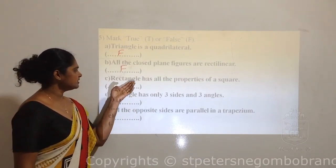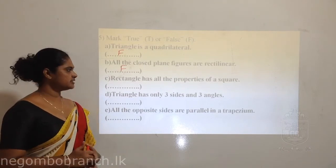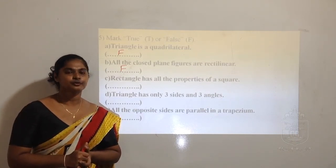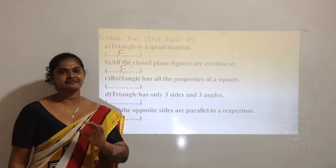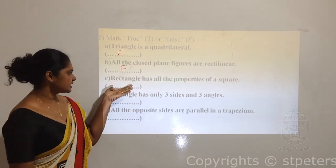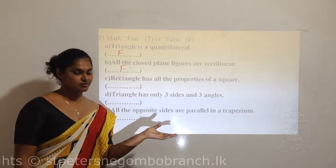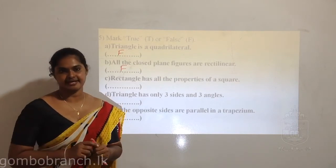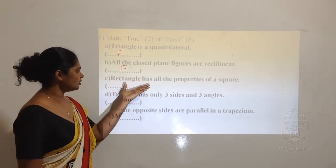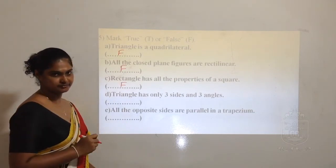Third: Rectangle has all the properties of a square. Can we say rectangle and square are the same? No - otherwise we could call a rectangle a square. Rectangle has all the properties of a square? No. All four sides are equal in the square, but only opposite sides are equal in the rectangle. So this is also false.